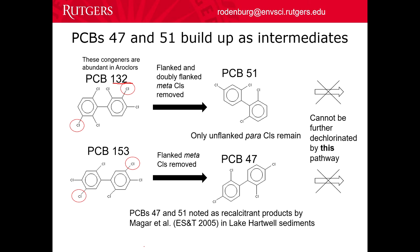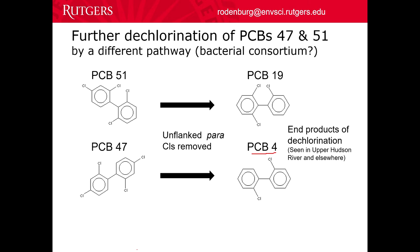These congeners 132 and 153 are common in the Aroclors, and the bacteria like to remove flanked and doubly flanked meta-chlorines. So you end up with congeners like 51 and 47 as characteristic intermediate products — they've got four chlorines left each, but still have a chlorine or two not in the ortho position. So they can still be dechlorinated, but all the flanked chlorines are gone, so these could build up as intermediates. And then the final products are usually PCB 4 or PCB 19, which have nothing but ortho-chlorines left.